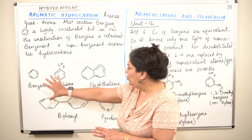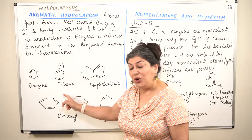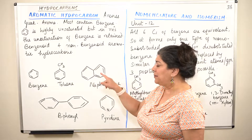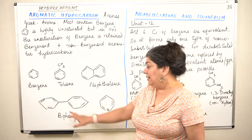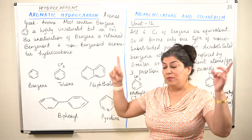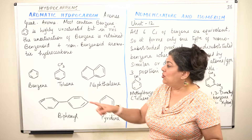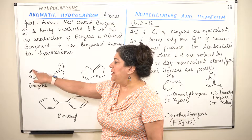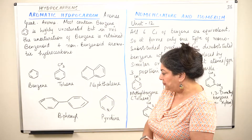Looking at examples: toluene has the benzene ring with a CH3 group attached to it. Naphthalene consists of two benzene rings fused together along two carbon atoms. Biphenyl has two benzene rings joined together by a single bond between two carbon atoms — the two hydrogens are removed and the two carbons of each benzene ring get attached by a single bond. Every carbon is tetravalent and forms four bonds.